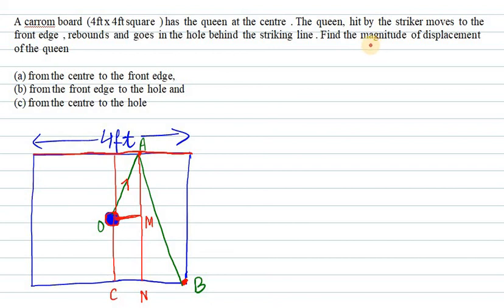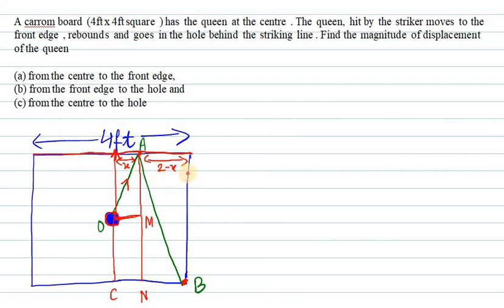We need to find the magnitude of displacement of the queen. For the first case, we find the displacement from the center to the front edge. The front edge has length four feet, so the half-point is two feet. We define a variable X and note that two minus X gives the remaining portion, so X plus (2 minus X) equals two. We need to find OA — the distance from center O to front edge point A.